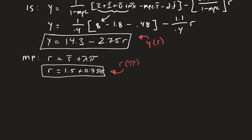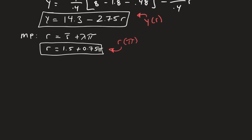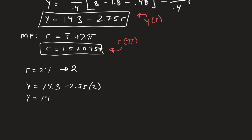What's given in the practice problem is that the real interest rate equals 2%. In this model we just plug in the number 2. So output equals 14.3 minus 2.75 times 2, which is 14.3 minus 5.5. Plugging that into our calculator, output equals 8.8.